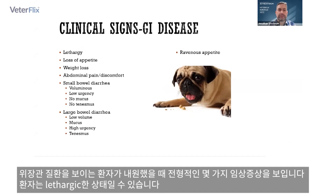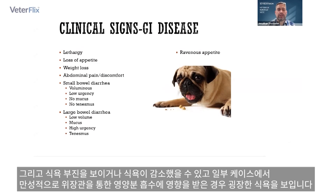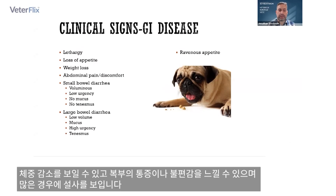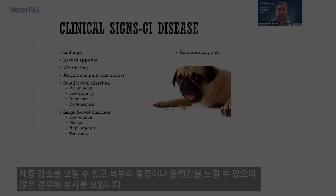When we have a patient presenting with gastrointestinal disease, we may see several typical clinical signs. The patient may be lethargic. There may be either a loss of appetite or a decrease in appetite, or in some cases there may be a ravenous appetite if the chronic disease is affecting absorption of nutrients from the GI tract. We may see weight loss, abdominal pain, and discomfort.